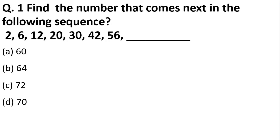This is a mathematical reasoning question. What is the next term in the sequence: 2, 6, 12, 20, 30, 42, and 56? We have options as 60, 64, 72, or 70.